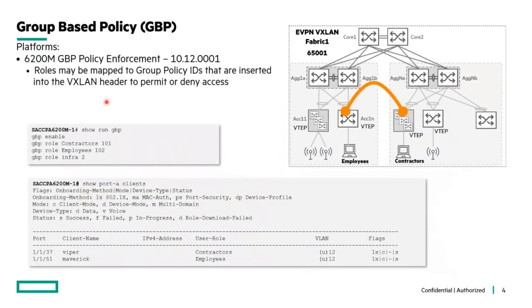In addition on the 6200M with 10.12, we now also support Group Based Policy. This is nothing new — it's been around for quite some time. Roles can be mapped to group policy IDs that get inserted into the VXLAN header for policy enforcement purposes. For example, on the 6200M we've identified different roles for contractors and employees with group policy IDs 101 and 102, which allows you to restrict access even on the same VLAN — both in VLAN 12 — between the two VTEPs in the VXLAN world.